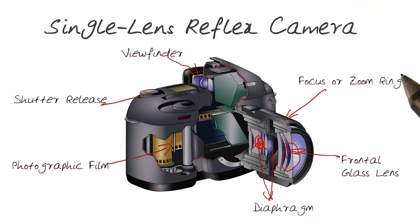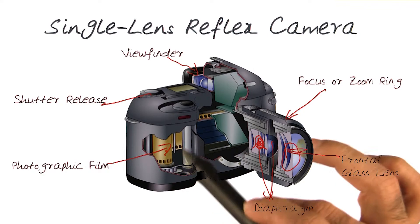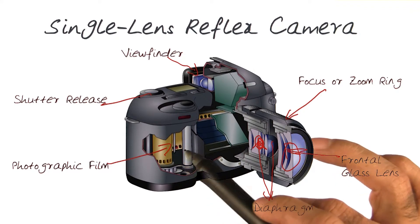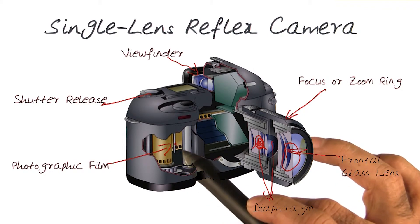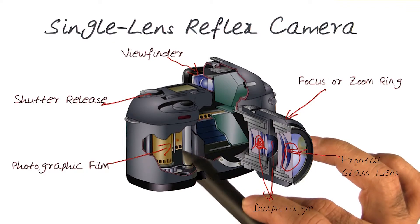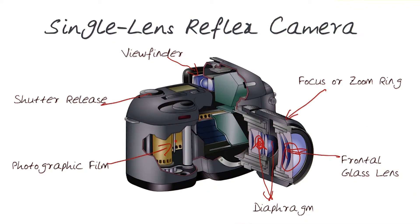In modern digital cameras, of course, the film has been replaced by a CCD sensor or a CMOS sensor — something we will be looking at in much more detail later.